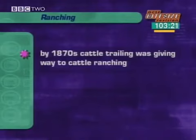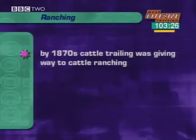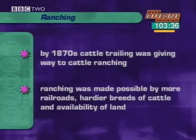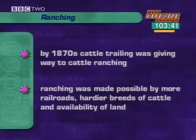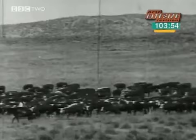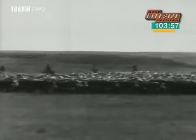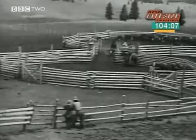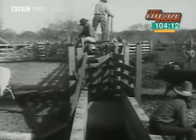By the 1870s, cattle ranches were being opened up all over the Great Plains. Why trail cattle from Texas when they could be farmed on ranches near the railheads? There were three main reasons: more railroads were being built; new hardier breeds of cattle could withstand harsh winters; and as buffalo herds were destroyed, vast areas of land became available. The cattle ranches regarded the land as open and unused, simply taking it even though it was often part of Native American lands. They let cattle wander at will over the open range, and every spring and autumn cowboys rounded them up, separating herds and branding calves. So much money could be made that people flocked to set up ranches, but by the late 1880s the ranges became overcrowded and the poor grass had become overgrazed.